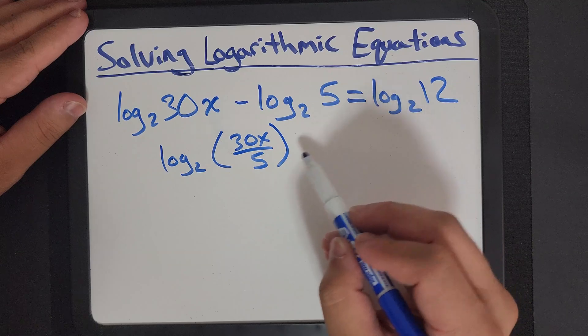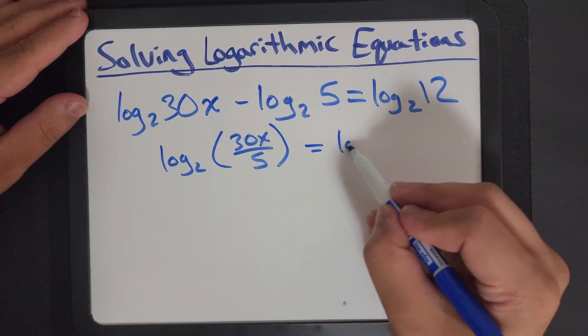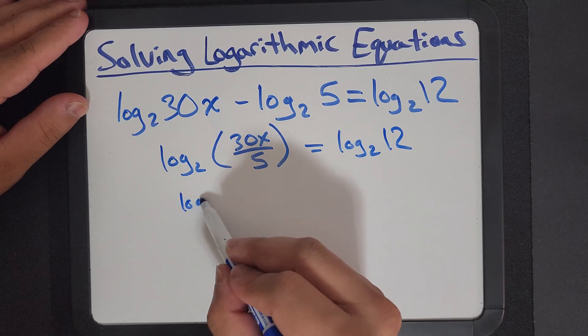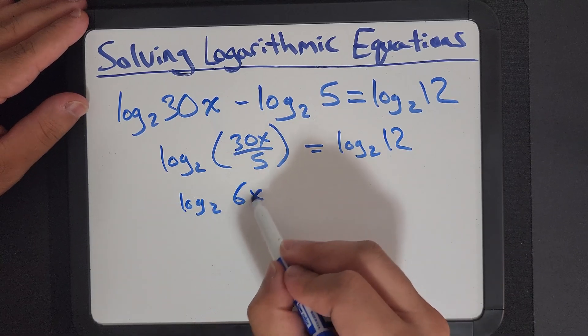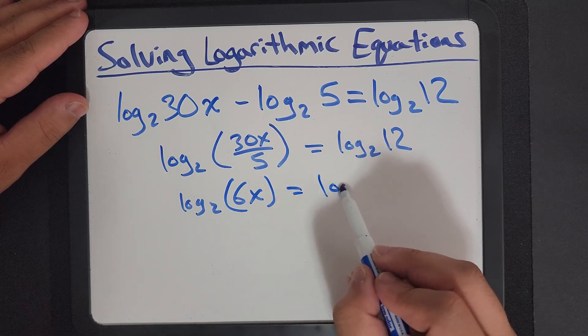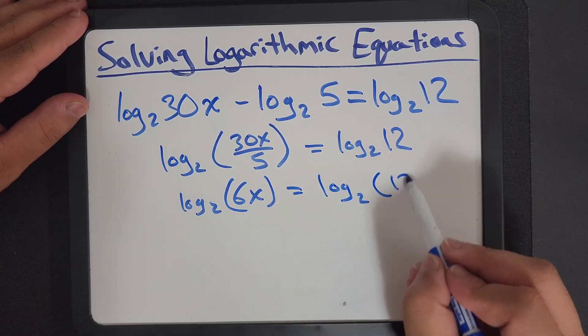So let's approach this. I see a subtraction. That could give me my log base 2 of 30x over 5, my quotient log, equals log 2 of 12. So this would be log 2 of 6x, because I divided it by 5, equals to log 2 of 12.